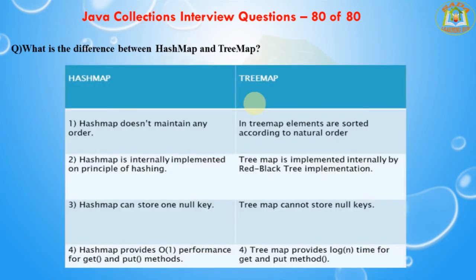The next question is what is the difference between HashMap and TreeMap? HashMap maintains no order but TreeMap maintains ascending order. HashMap doesn't maintain any order, but in TreeMap elements are sorted according to natural order. HashMap is internally implemented on the principle of hashing. TreeMap is internally implemented using a Red-Black tree. HashMap can store one null key whereas TreeMap cannot store null keys. HashMap provides O(1) performance for get and put methods; TreeMap provides O(log n) time for get and put methods.